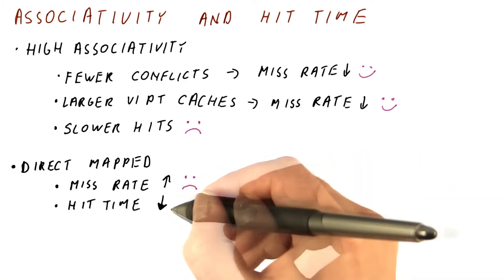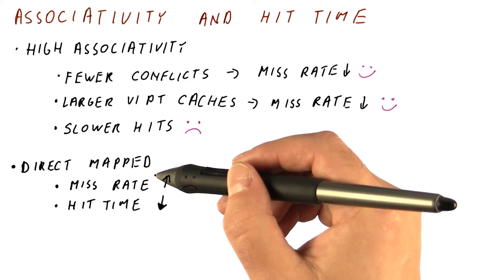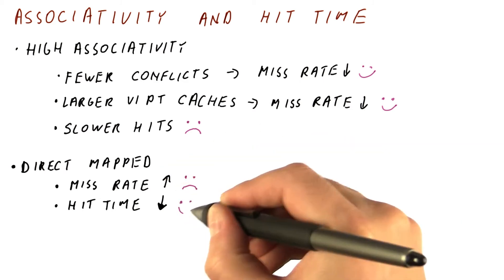But the hit time is reduced because a direct-mapped cache has only one place where a block can be, so we can quickly check whether it's there or not, and we like that.